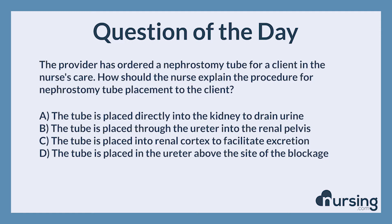The provider has ordered a nephrostomy tube for a client in the nurse's care. How should the nurse explain the procedure for nephrostomy tube placement to the client? A. The tube is placed directly into the kidney to drain urine. B. The tube is placed through the ureter into the renal pelvis. C. The tube is placed into the renal cortex to facilitate excretion. D. The tube is placed in the ureter above the site of the blockage.